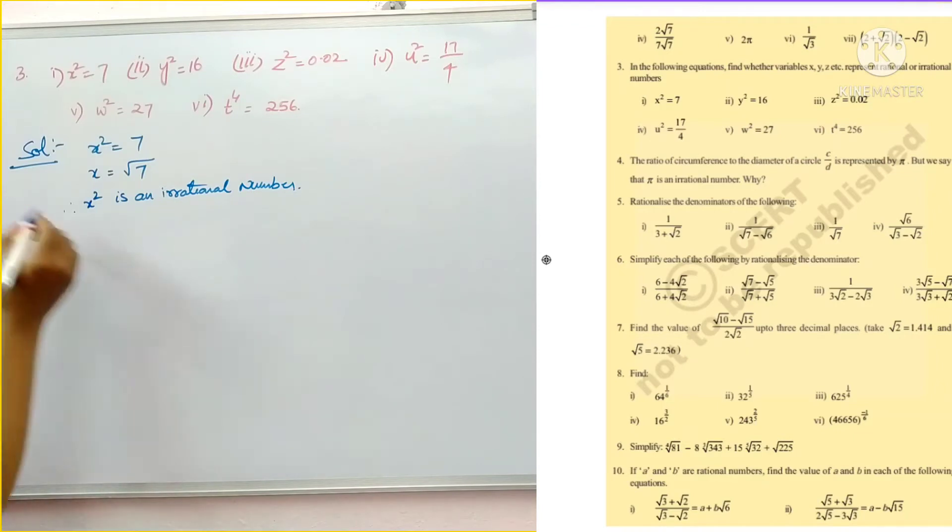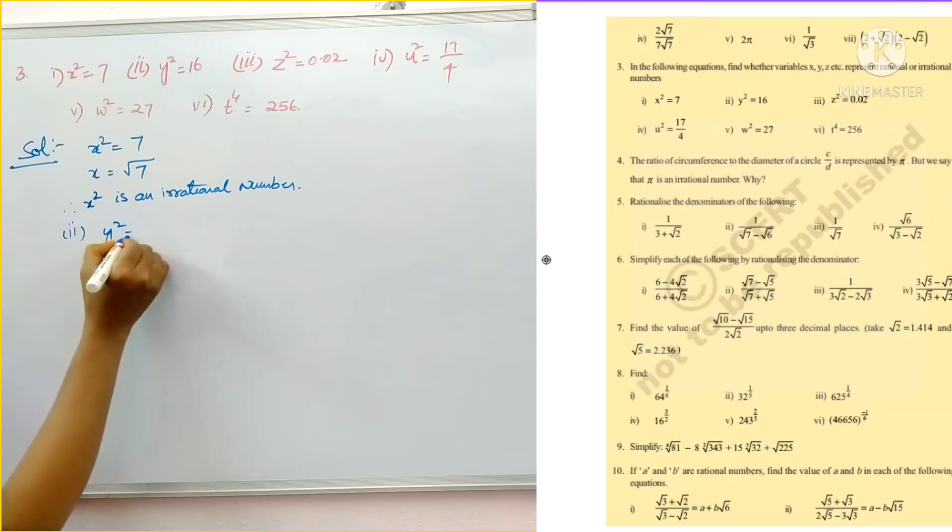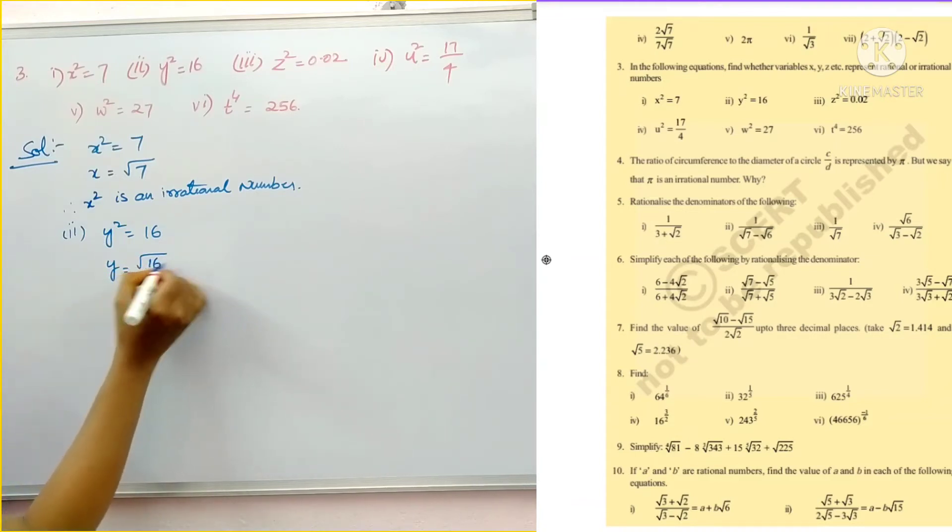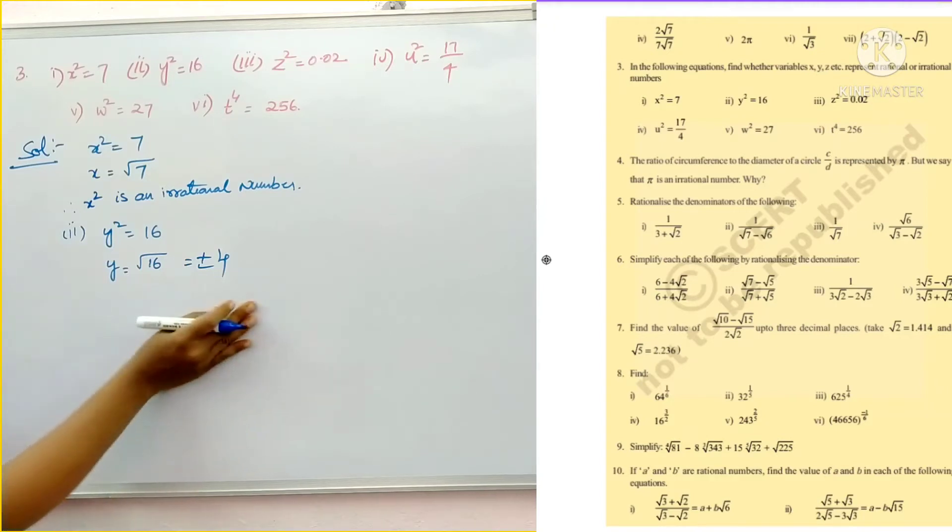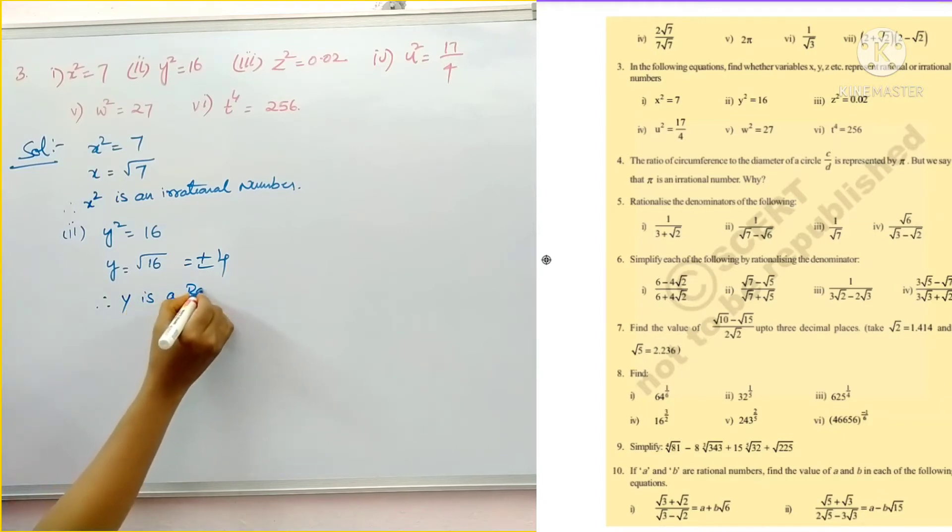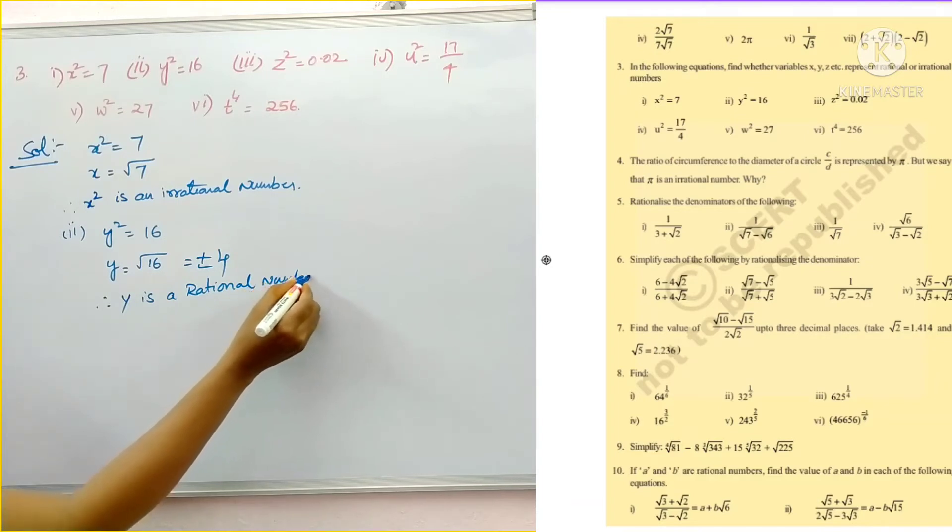So x is an irrational number. Second one, y square is equal to 16. Then y is equal to square root of 16. Value of 16 plus or minus 4. Square root of 16 means it is plus or minus 4. So clearly, this is a rational number. So y is a rational number.